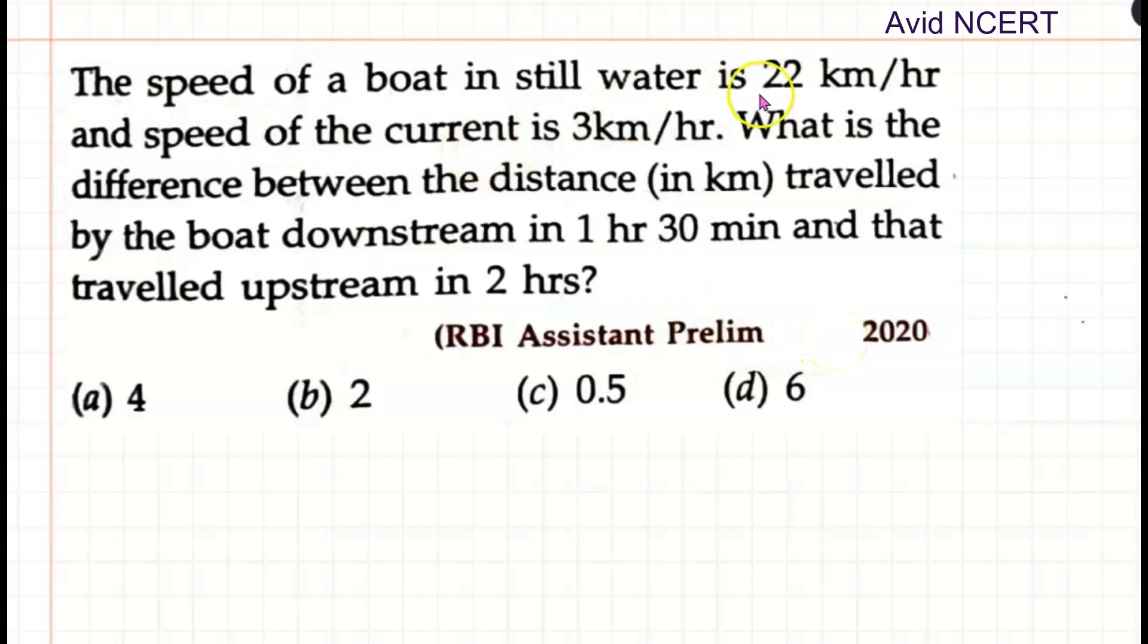The speed of a boat in still water is 22 km per hour and the speed of the current is 3 km per hour.